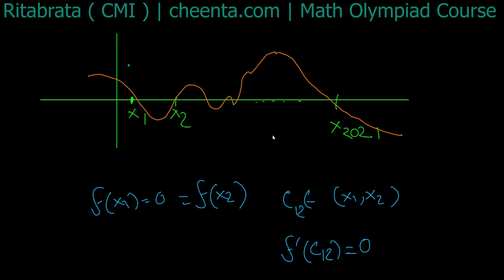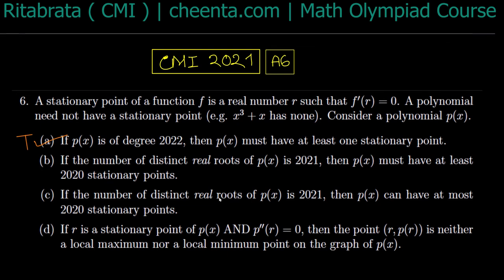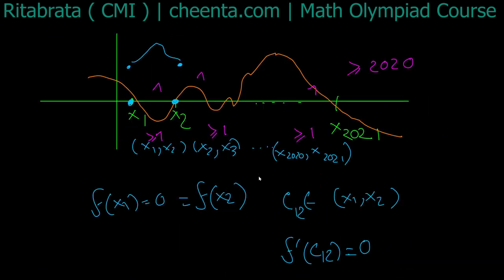So wherever f takes the same value at two points, there is a stationary point between them. Applying this across all adjacent root intervals — x1 to x2, x2 to x3, up to x2020 to x2021 — we get at least 2020 stationary points.